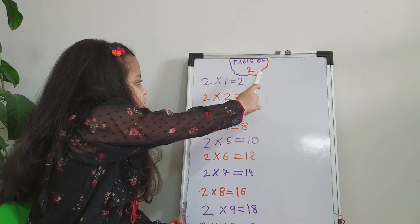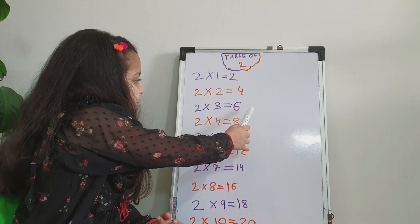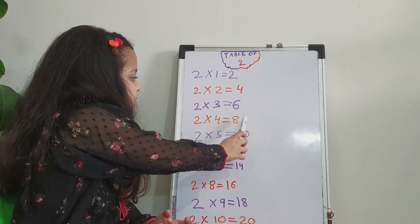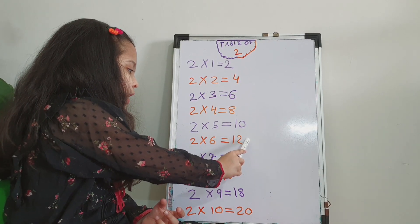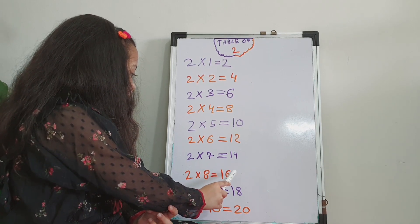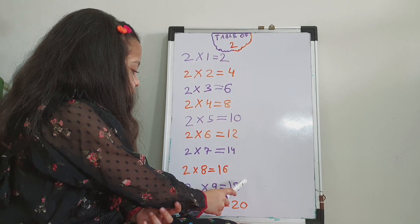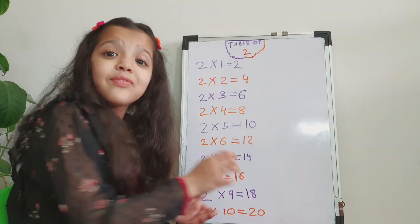Two ones are two, two twos are four, two threes are six, two fours are eight, two fives are ten, two six are twelve, two sevens are fourteen, two eights are sixteen, two nines are eighteen, two tenths are twenty. Very good!